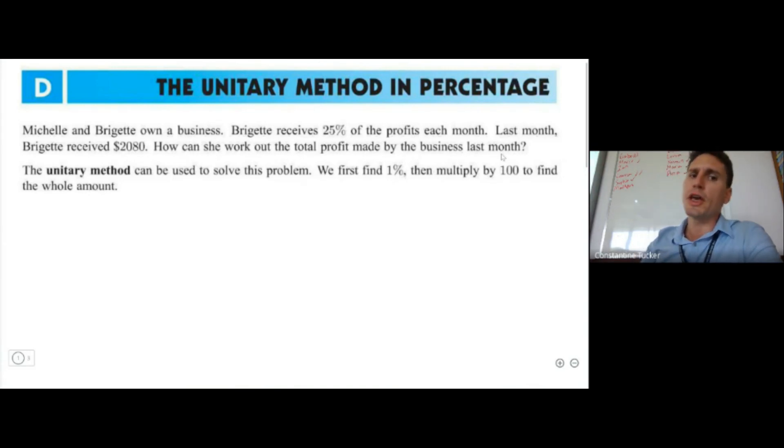Now here, some students might be familiar with other tricks where they take 25 and get to 100 quite easily, for example by multiplying by four. But here we're going to introduce ourselves to a different method which is useful especially when we have strange numbers.